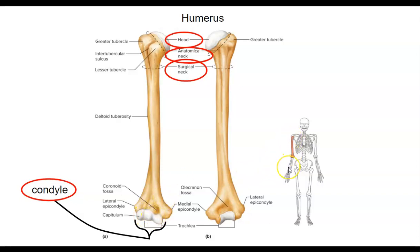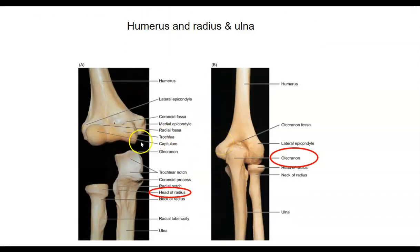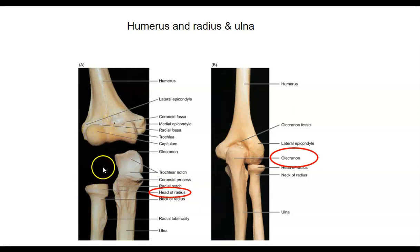Now let's work our way further down the arm, more distally, and look at the two bones of the forearm. On the ulna, I want you to be able to identify the olecranon process. And on the radius, I'd like you to identify the head of the radius. The olecranon process on the ulna articulates with the condyle, and the head of the radius articulates with the other part of the condyle on the humerus. Here's the anterior view and the posterior view of the elbow joint — see the olecranon and the radial head.